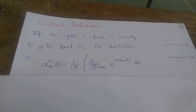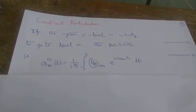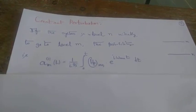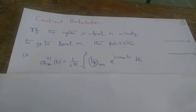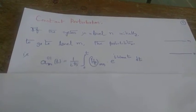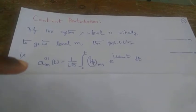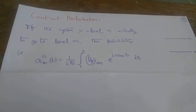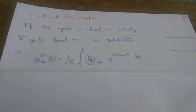We know that from the time-dependent perturbation theory, the probability for the transition of the state from an initial state n to a final state m will be the modulus square of a_m^(1)(t) squared, where this a_m^(1)(t) is given by this expression here.